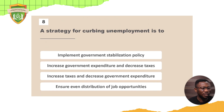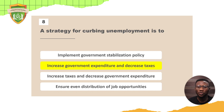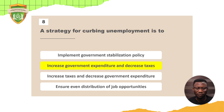Question eight: a strategy to curb unemployment is to increase government expenditure and decrease taxes. When the government spends more money on building schools and roads, workers on those projects have jobs and teachers are employed. When government decreases taxes, people have more money to spend and that creates more employment. Question nine: labor productivity is defined as the output of each person per hour. What you can produce in one hour determines your productivity.